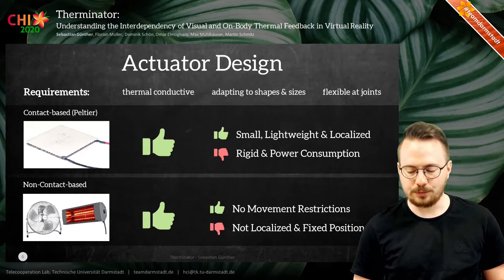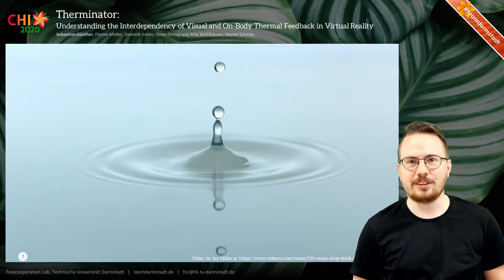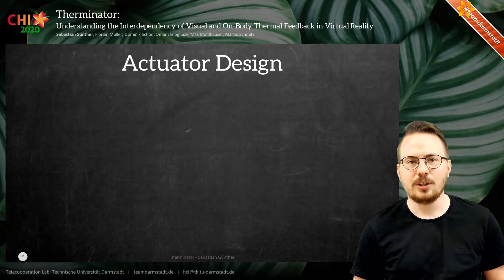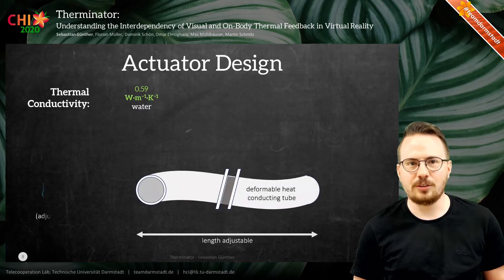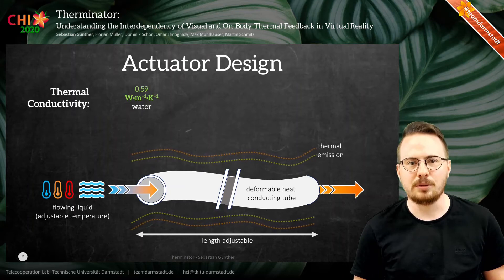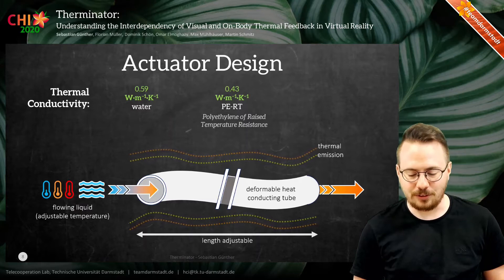To overcome those disadvantages, we thought: why not use liquids as a medium to transfer temperature? Liquids have the advantage of good thermal properties and can be used very flexibly. In particular, we looked at water, which has a thermal conductivity of roughly 0.6 Watt per meter times Kelvin. Liquids need to be inside some container to be actually useful, so we decided to use tubes, which we can adjust, bend, and through which a liquid with different temperature can flow. Our tubes had to have similar thermal conductivity as water and allow for enough flexibility, which we found in tubes made of polyethylene of raised temperature resistance, or PERT tubes for short.